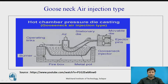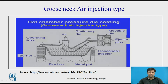Looking at the gooseneck diagram: these are the operating links, this is the burner, this is the firebox, this is the metal pot, and this is the gooseneck. There is a stationary fixed die and a movable die, with ejector pins. The metal flows from the metal pot through the gooseneck via compressed air, filling the die cavity. Once the molten metal solidifies, the ejector pins remove the part. Because of its shape, this is called the gooseneck air injection type.